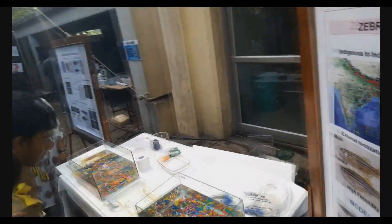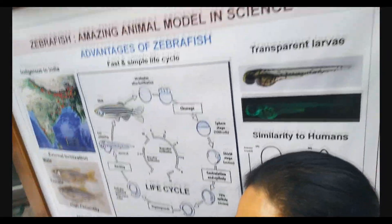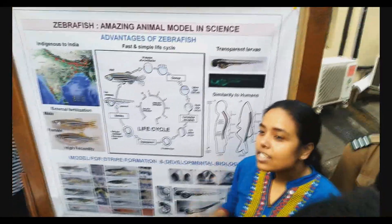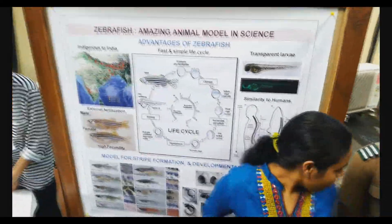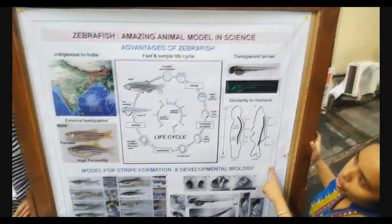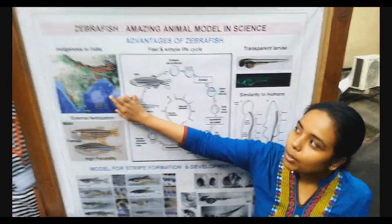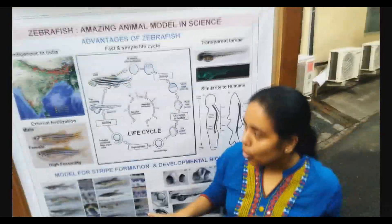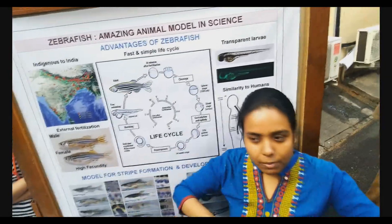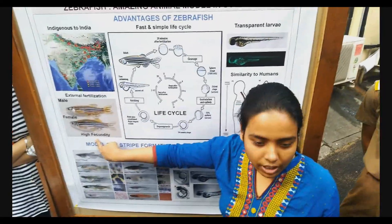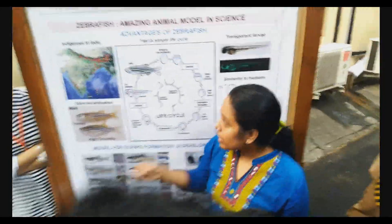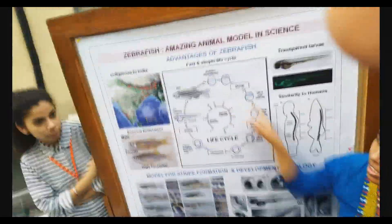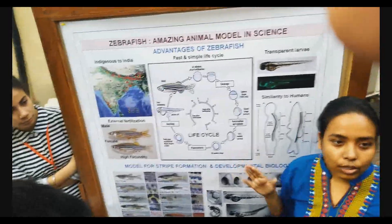Have you ever heard of zebrafish? We are using fish to answer some very important questions in biology. Why are we using zebrafish? Because zebrafish are indigenous to India, which means you can purchase zebrafish in India pretty easily. This is a female fish. They do external fertilization, so you can collect the eggs or the embryos very easily. The life cycle of the fish is completed in about 3 days.